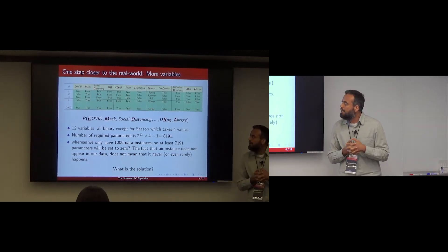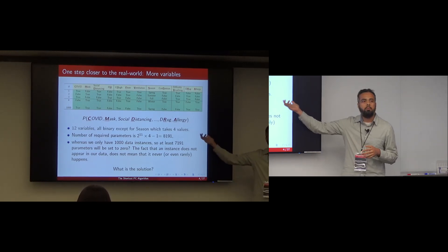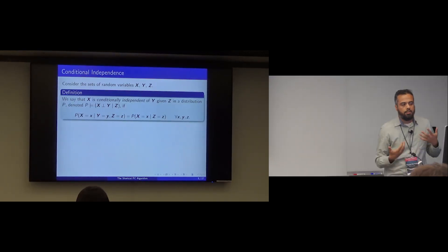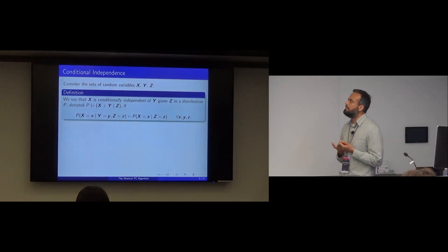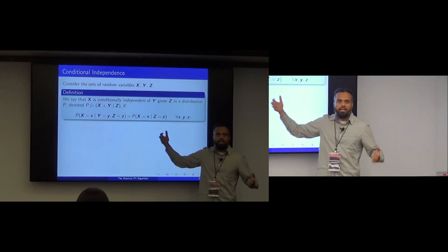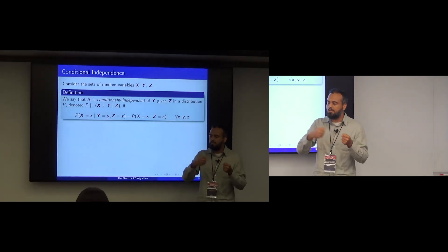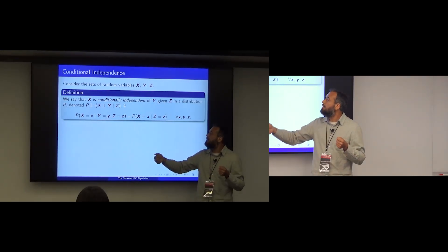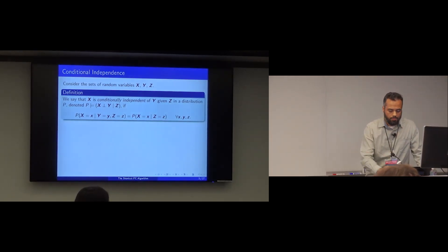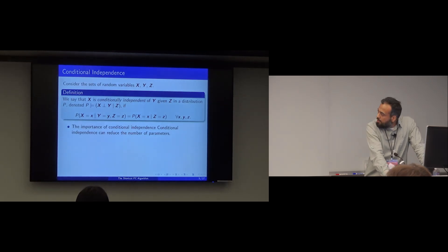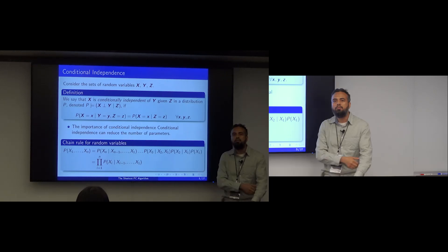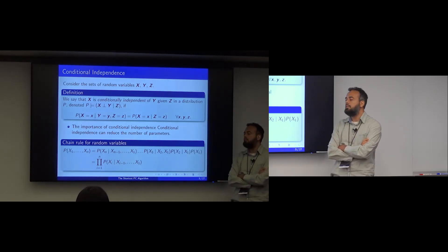One idea that helps simplify the joint probability distribution — which is the key to answering any probability query — is to use conditional independencies. You all likely know what conditional independence is: X and Y are independent if the probability of the joint is the product of the two. The key point is that conditional independence can reduce the number of parameters required to represent a joint probability distribution.